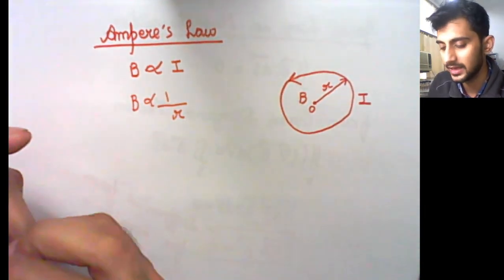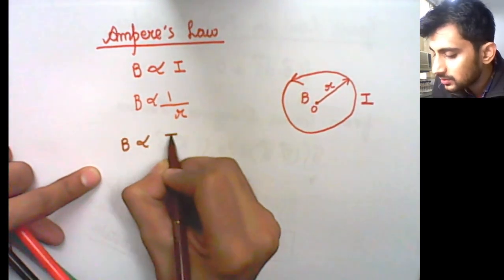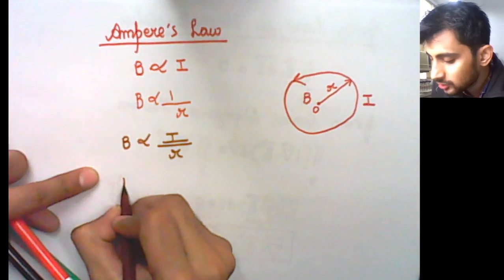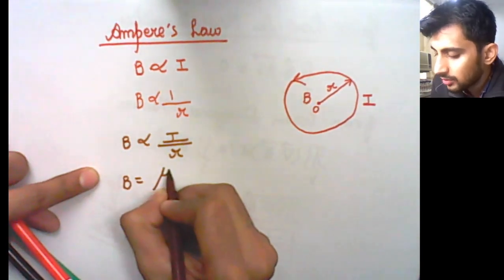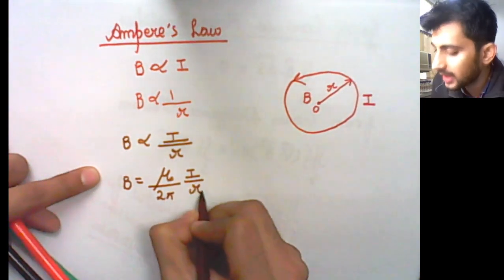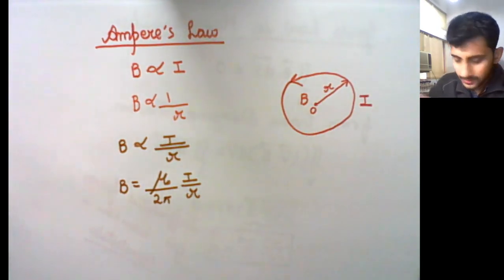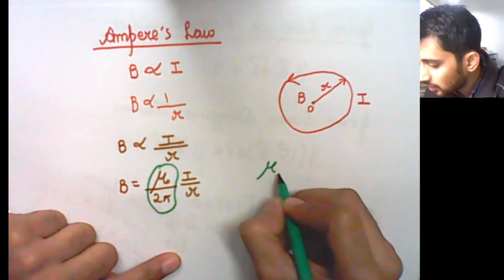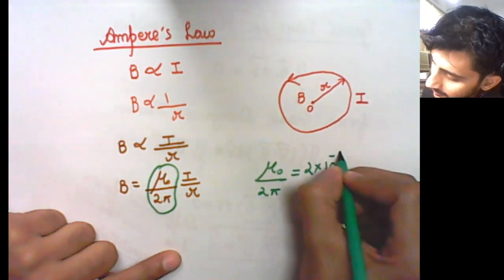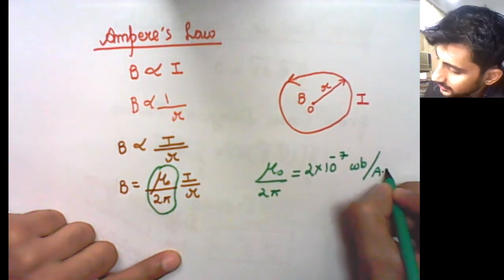Combining the two proportionalities, we get that B is proportional to I upon R. Replacing the proportionality with a constant, we get B equals mu0 upon 2pi times I upon R, where mu0 upon 2pi is a constant.